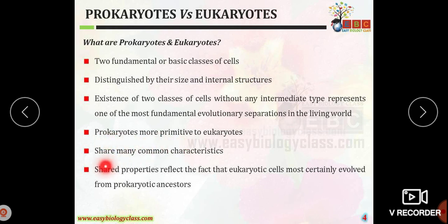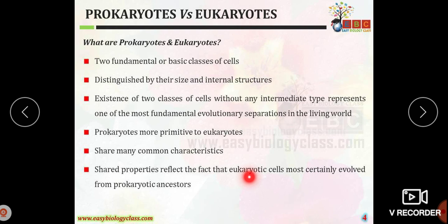Prokaryotic organisms have been present in this universe for a long time. Both organisms share many common characteristics and give evidence for the endosymbiotic theory. Most eukaryotic cells evolved from prokaryotic ancestors — today's chloroplasts are derived from blue-green algae and today's mitochondria are derived from aerobic bacteria.